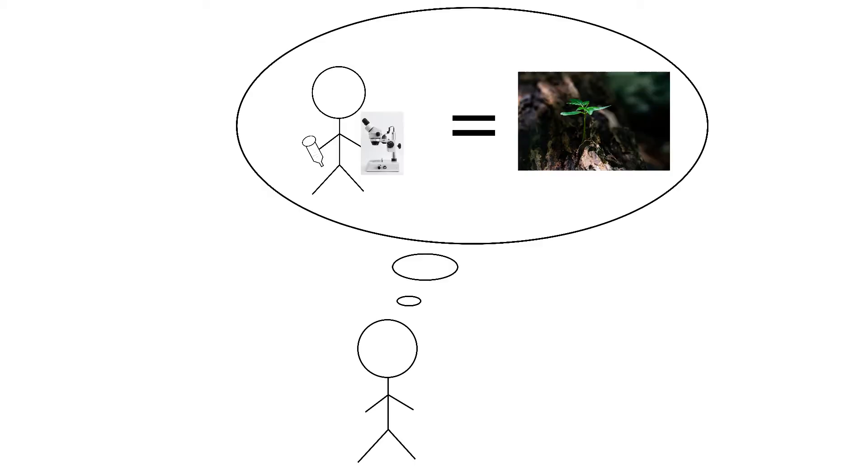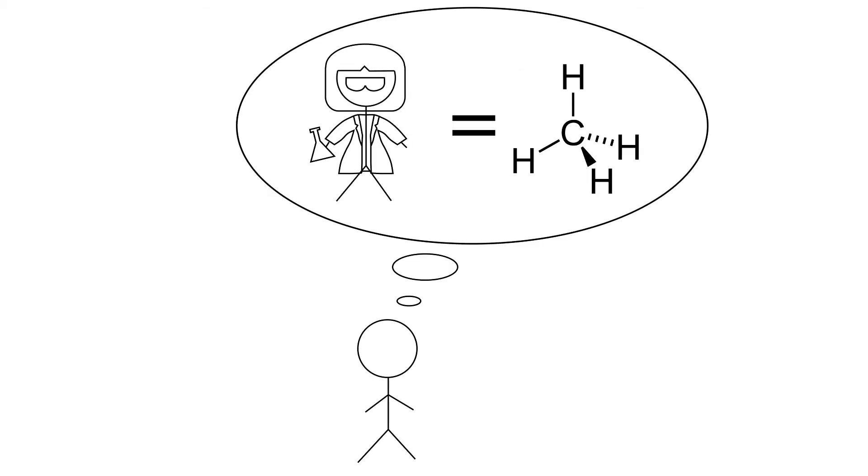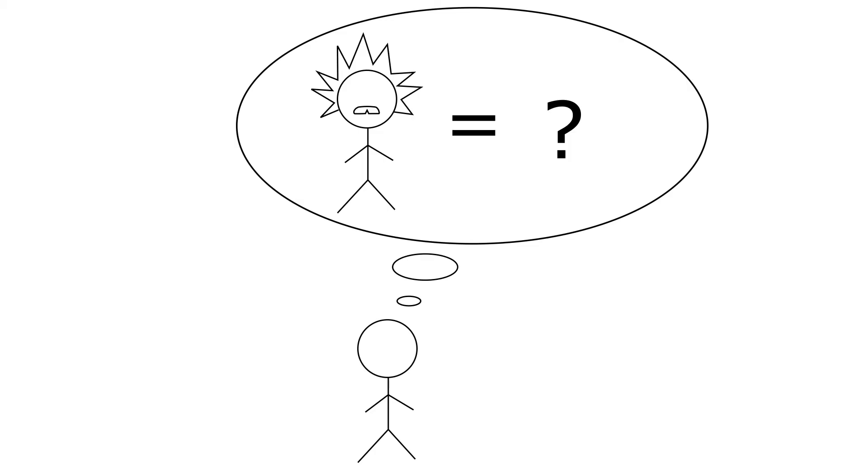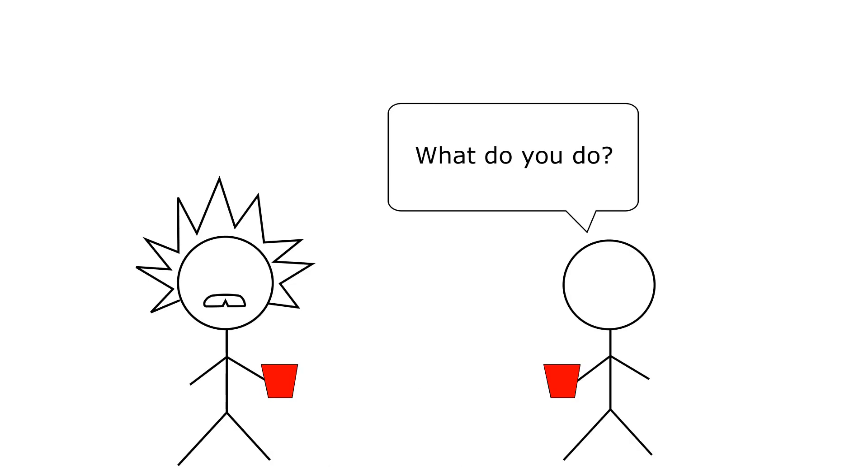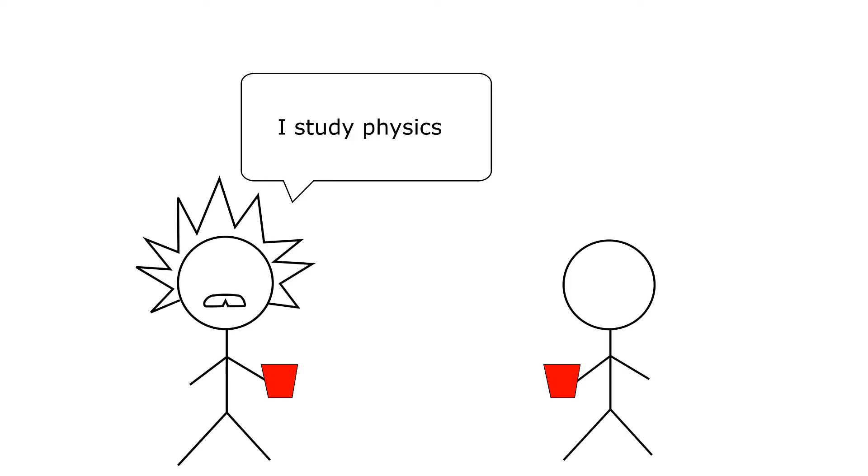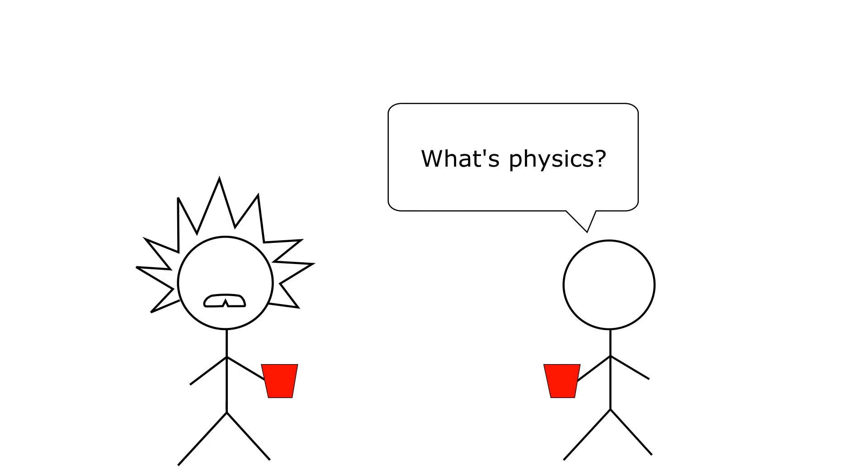It's common knowledge that biologists study life and chemists study how molecules interact, but what exactly do physicists study? The easy answer to the question of what a physicist does is simply that a physicist studies physics. Unfortunately this is not a very satisfying answer and just raises another question: what is physics?